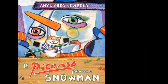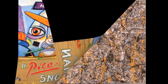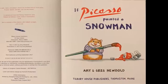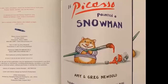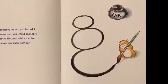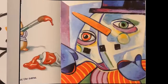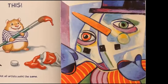Painted a Snowman, written and illustrated by Amy and Greg Newbold. If someone asked you to paint a snowman you would probably start with three white circles stacked one upon another. Then you would add black dots for eyes, an orange triangle nose, and a black dotted smile. But if Pablo Picasso painted a snowman it would look like this. Not all artists paint the same.